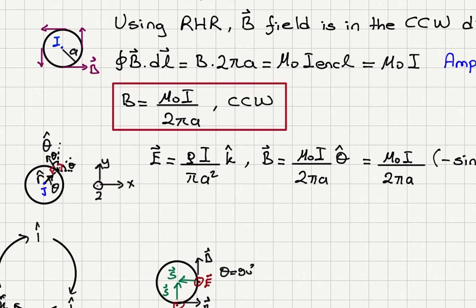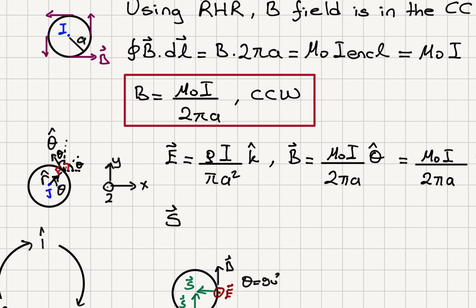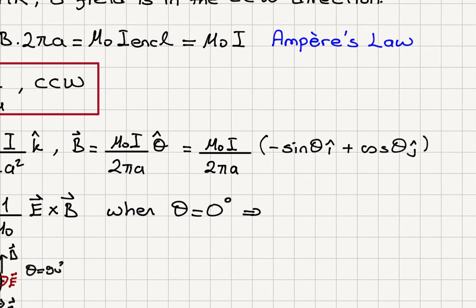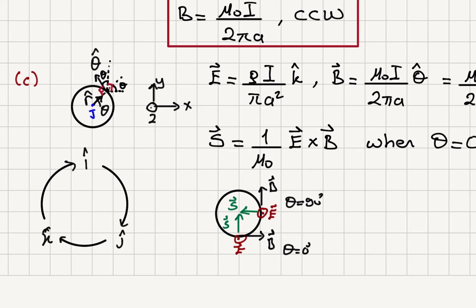Now we are ready to write the Poynting vector. The Poynting vector S equals 1 over mu zero times E cross B. Let's check what happens when theta equals zero degrees. When theta equals zero, the electric field is in k-hat direction. So we compute k-hat cross with the magnetic field. Theta equals zero gives no x-component; it gives a y-component: k-hat cross j-hat. Using cyclic permutations of i-hat, j-hat, k-hat, k-hat cross j-hat equals minus i-hat.